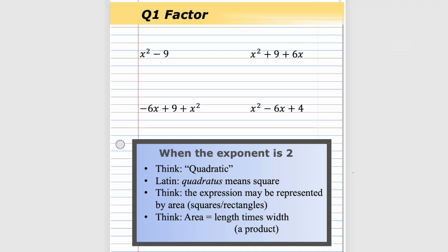We've been learning about how to factor by dividing out a greatest common factor, but also factor a three-termed expression in the particular form ax² plus bx plus c. In this video, we're going to try to mix things up a little bit and have you work a little bit faster to get the factored form.